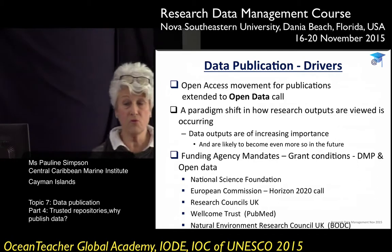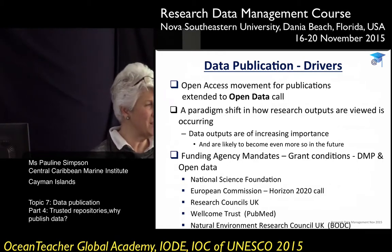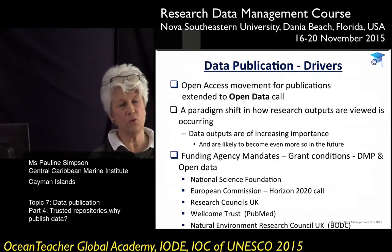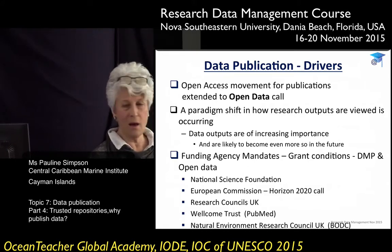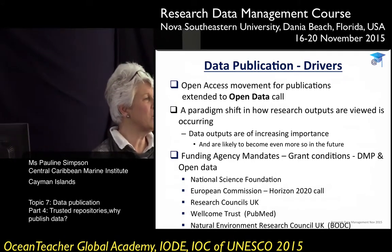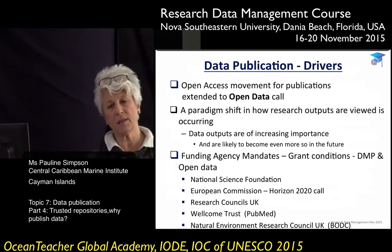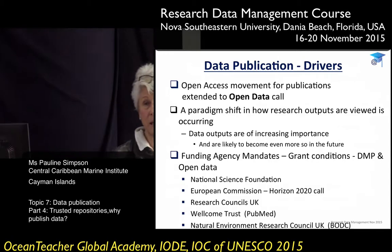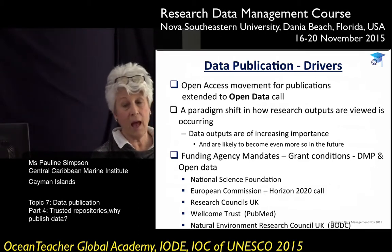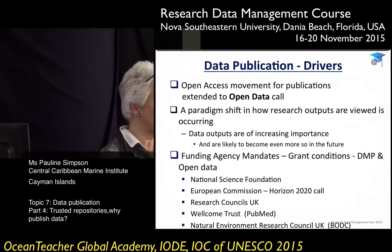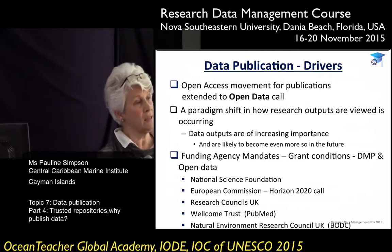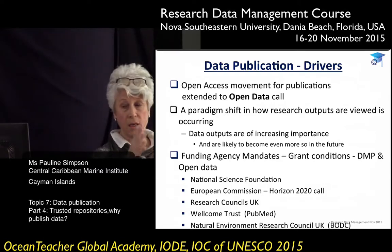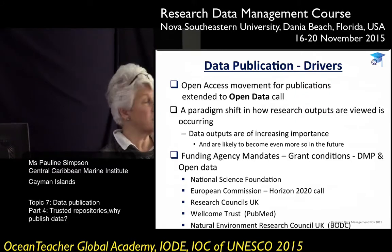We're going to look at some drivers. Of course it's the open data core that followed on from the open access movement for publications, but I think you'd all agree that there has been a paradigm shift in how research outputs are viewed — they're including much more to evaluate a researcher's work. Designing web pages and writing software are starting to become output metrics. Data outputs are becoming part of that with increasing importance. But the biggest driver of all is the funding agency mandates: they want a data management plan — you know all about that because you wrote one yesterday — and they want open data.